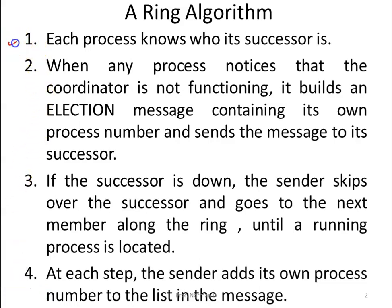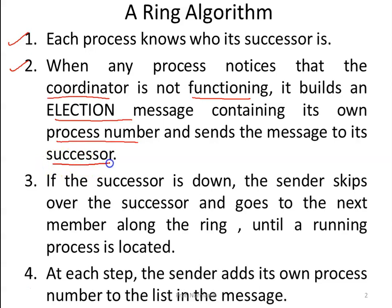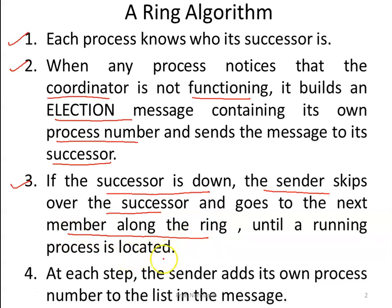In the ring algorithm, each process knows who its successor is. When any process notices that the coordinator is no longer functioning, it builds an election message containing its own process number and forwards this message to its successor. If the successor is down, the sender skips over it and goes to the next member along the ring until a running process is located. As the message goes from process to process, each stage adds its own process number to the list in the message.